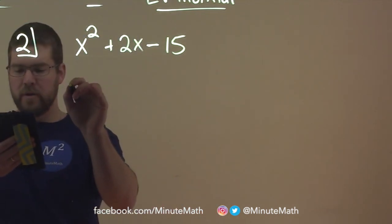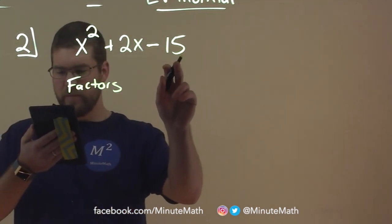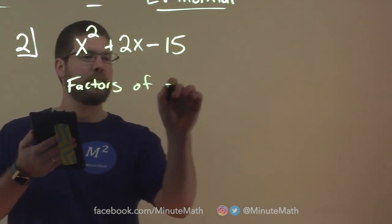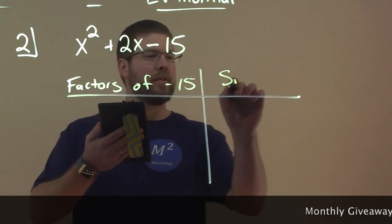We have the factors. What we're going to do is find the factors of our c term, which is negative 15, and we're going to write the sum of factors.